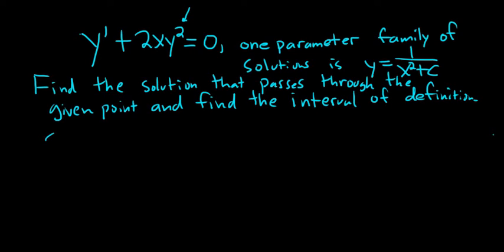Okay, so part a, let's go through this very carefully. This is a really key example. So the solution passes through 0, negative 1. The question is to find the solution that passes through this point and find the interval of definition. In this case, x is 0 and y is negative 1.